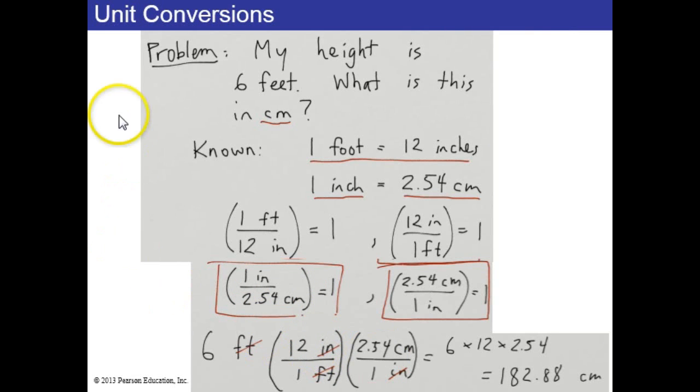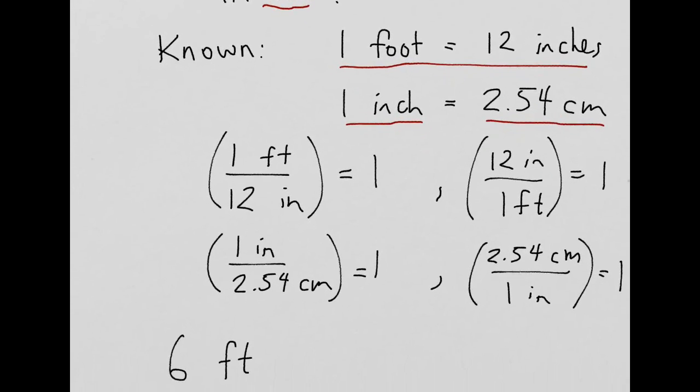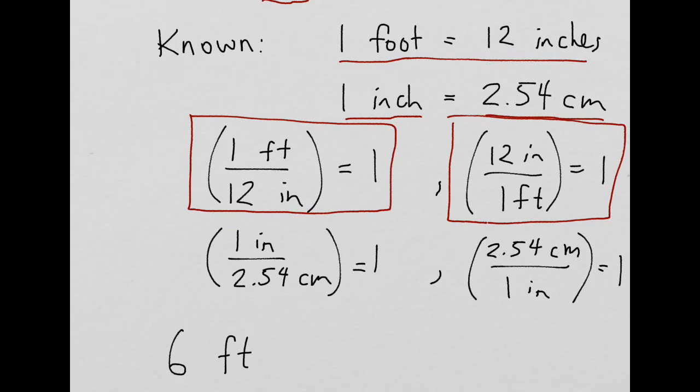Let's do an example of converting between units. Let's say my height is six feet. What is this in centimeters? And what we know is that one foot equals 12 inches, and we know that one inch equals 2.54 centimeters. Since anything divided by itself equals one, we can set up these numbers which are equal to one. For example, one foot divided by 12 inches, that equals one. Or, upside down, 12 inches divided by one foot equals one. Also, using the second conversion there, we know that one inch divided by 2.54 centimeters equals one, and 2.54 centimeters divided by one inch equals one.